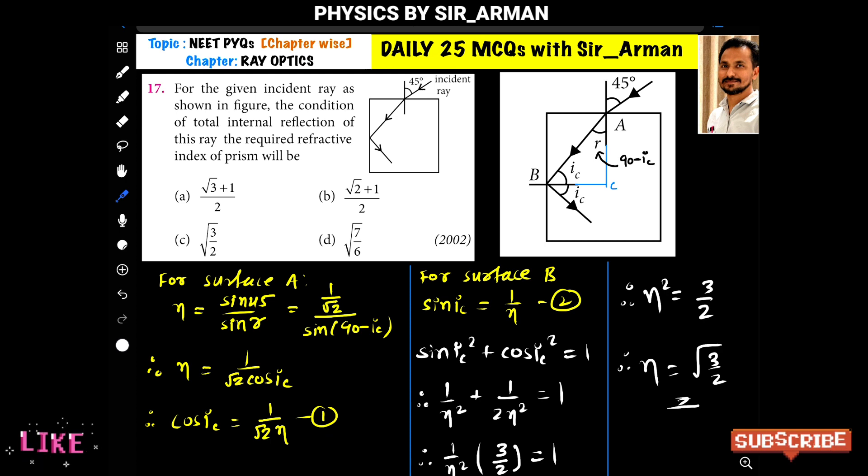Now the total internal reflection is taking place at surface B, so for surface B, the condition for the total internal reflection is sin ic equals 1 by eta. This is the condition.